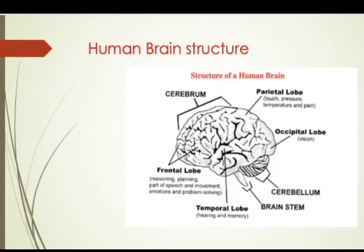If you look at the human brain structure, it is made up of the cerebrum, the cerebellum, and the brain stem. In addition, you have four different lobes: namely, the frontal lobe, the temporal lobe, the parietal lobe, and the occipital lobe.